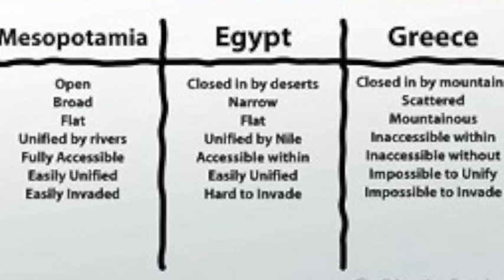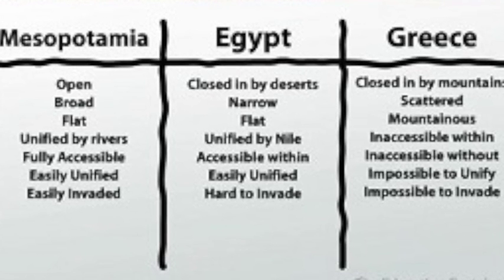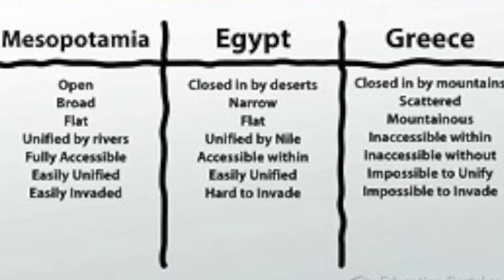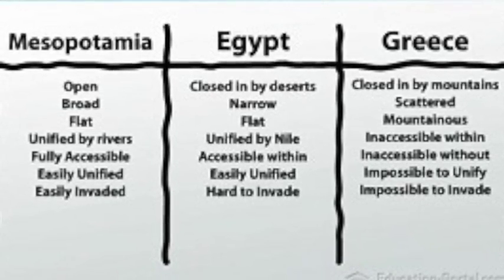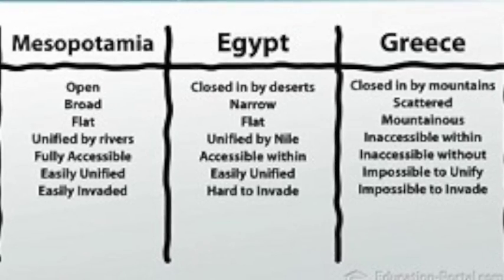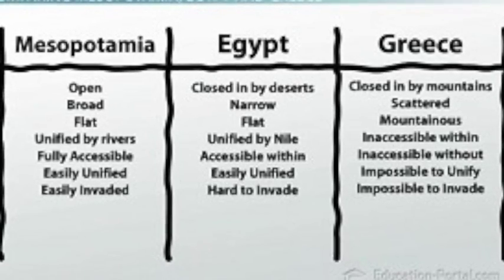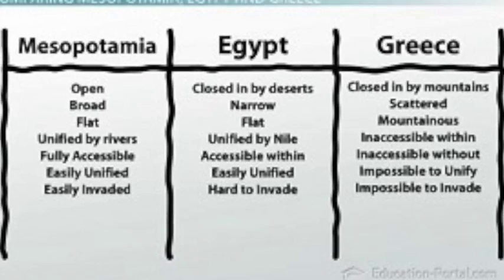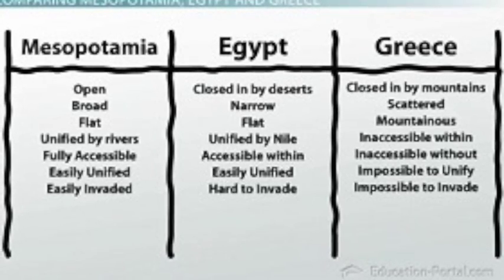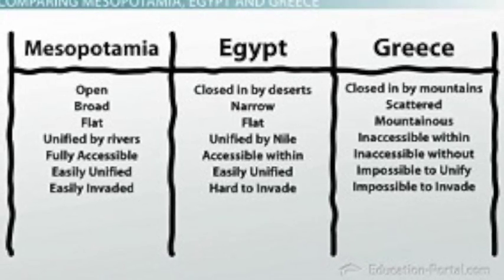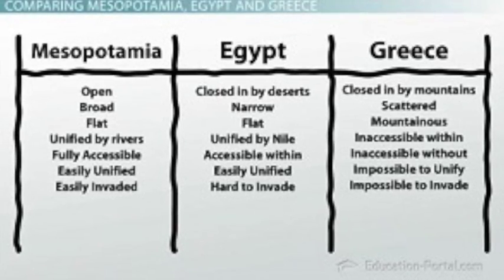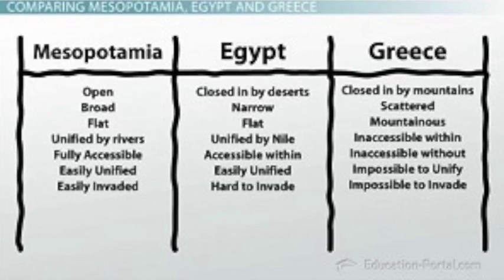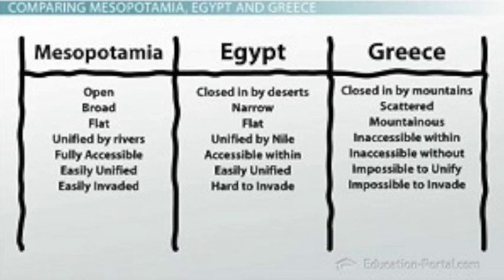What you see now is a comparison of the geographical layouts of three different civilizations: Mesopotamia, Egypt, and Greece. Greece is the most mountainous of the three. Both Mesopotamia and Egypt have unifying rivers that allow for trade and easy communication. Greece was probably the most isolated, while Egypt was the second most isolated, with Mesopotamia being the most open.